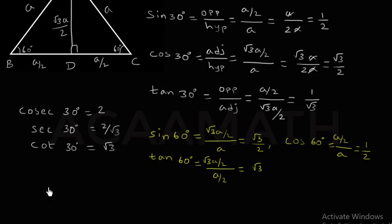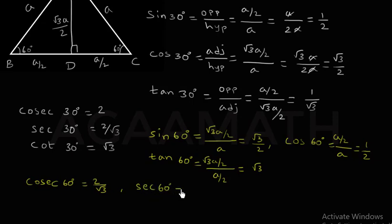Similarly, the inverse of sine is cosecant 60 degrees, which is 2/√3. And next, secant 60 degrees, which is the inverse of cos 60, so 1/(1/2) = 2. And next, cot 60 degrees, which is the inverse of tan 60 = √3, so cot 60 = 1/√3. So here we have learnt the trigonometric ratio values of 30 degrees as well as 60 degrees.